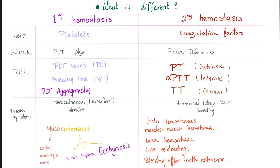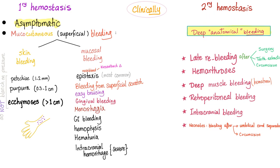Factor 13 deficiency causes a problem in secondary hemostasis. A key feature to remember is late re-bleeding — late because Factor 13 acts after all previous factors have worked. Symptoms include deep bleeding, late re-bleeding after surgery, after tooth extraction, and after circumcision. Also: hemarthrosis, deep muscle bleeding, retroperitoneal bleeding, and intracranial bleeding. In neonates, there is bleeding after umbilical cord separation or circumcision — again, late severe re-bleeding after surgery.